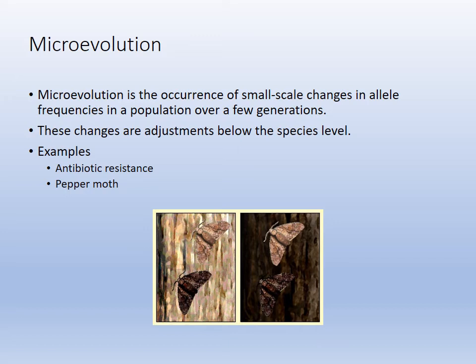Microevolution is changes within a species — adjustments, if you will. Before the Industrial Revolution in England, most things were whitewashed, so the white moth had better camouflage, and 80% of the population were lighter in color. After the Industrial Revolution, they burned a lot of coal and soot covered things. The dark moth then had better camouflage, and evolution shifted so you had a greater population of dark moths to light moths. That's simple microevolution — adjustments to changes in the ecosystem.